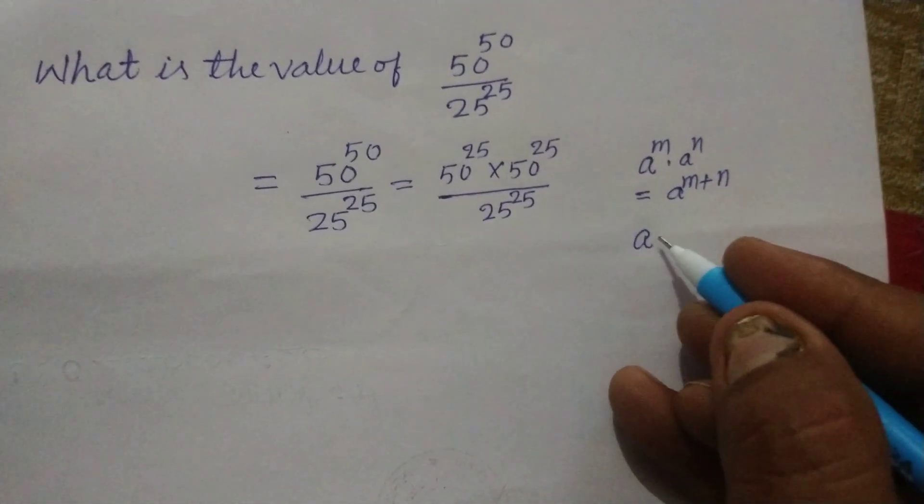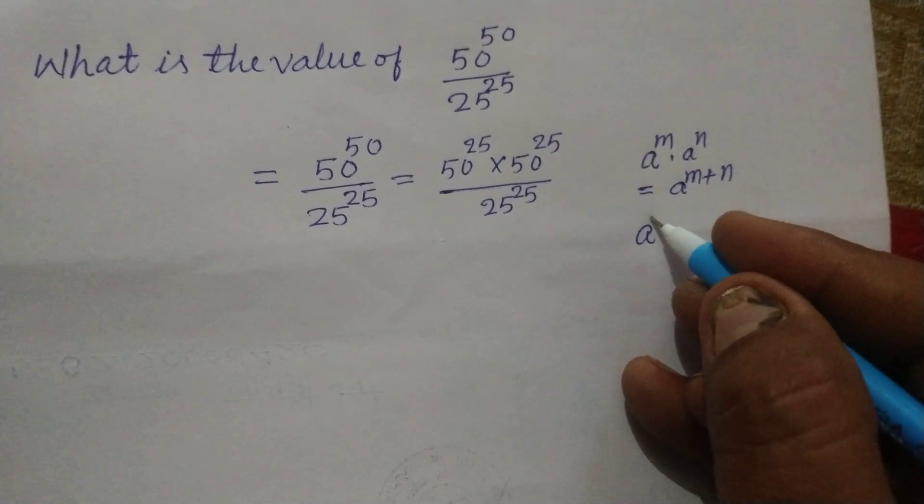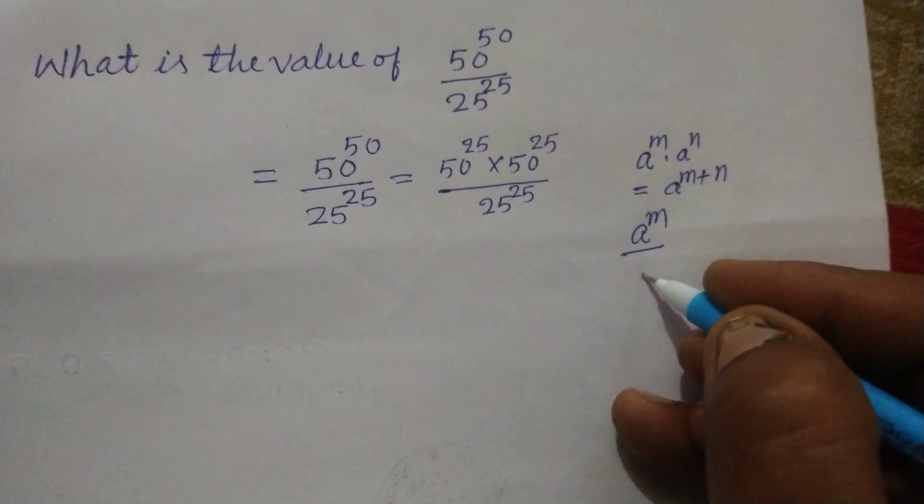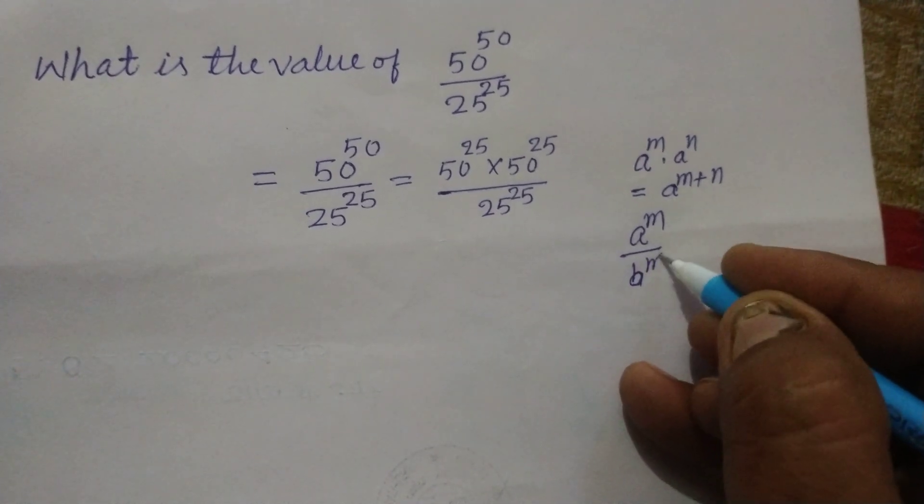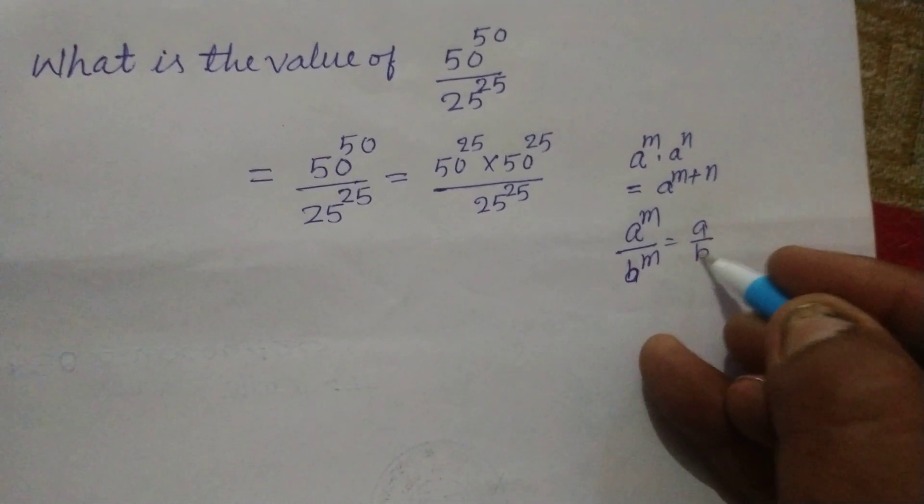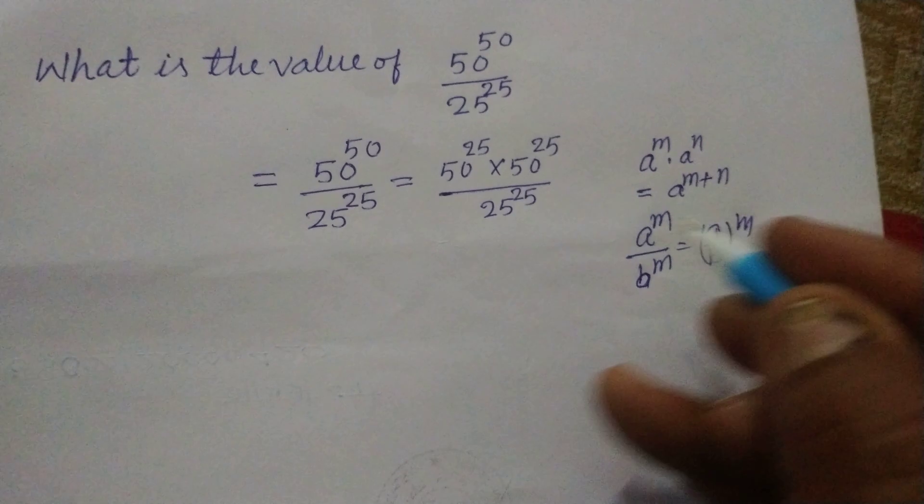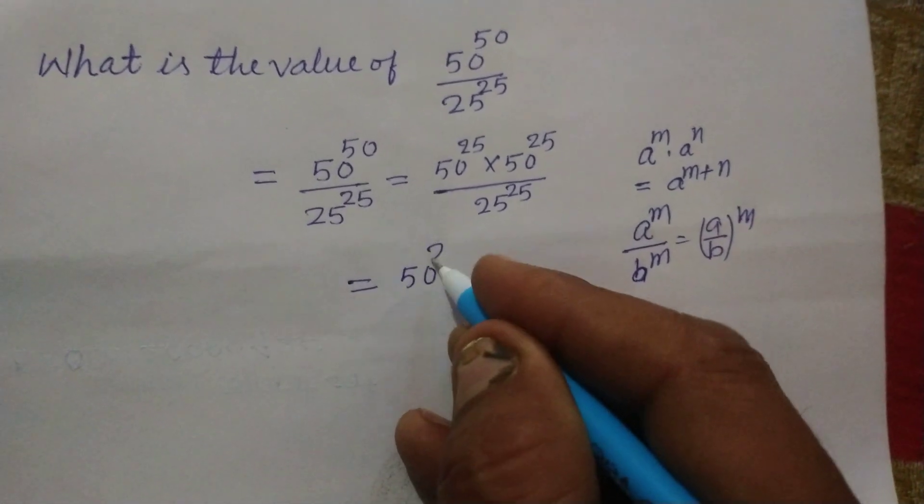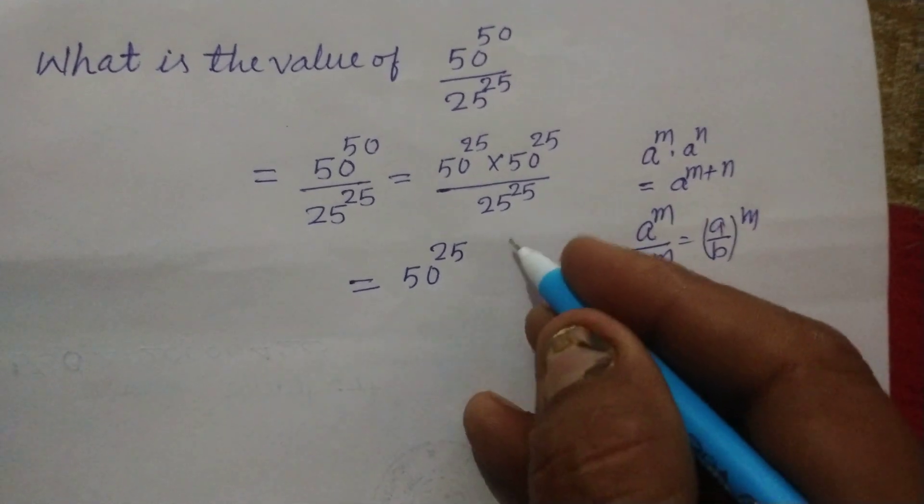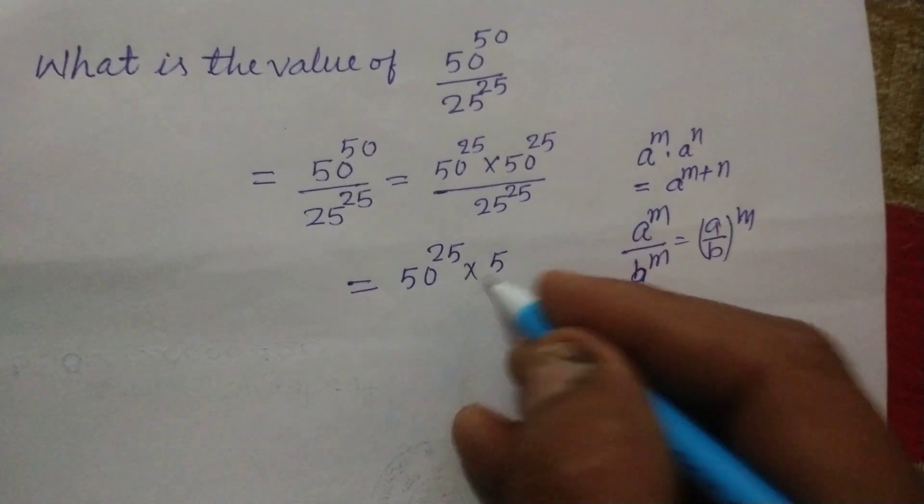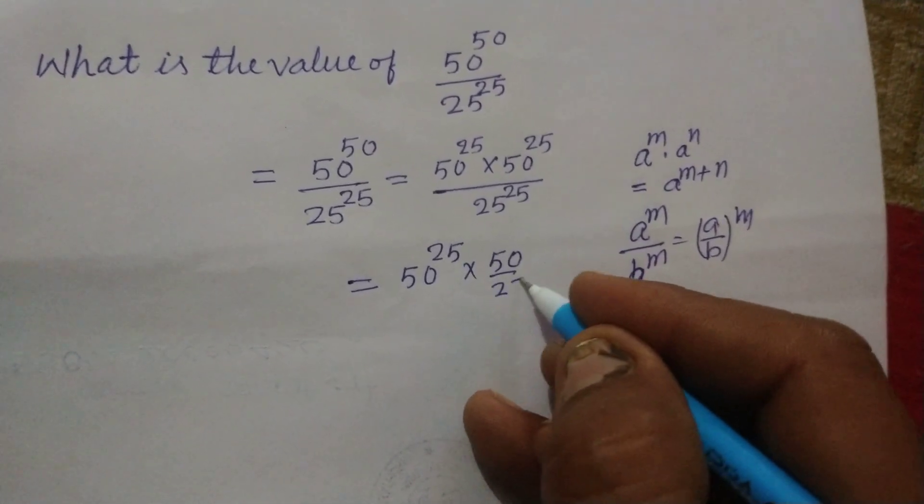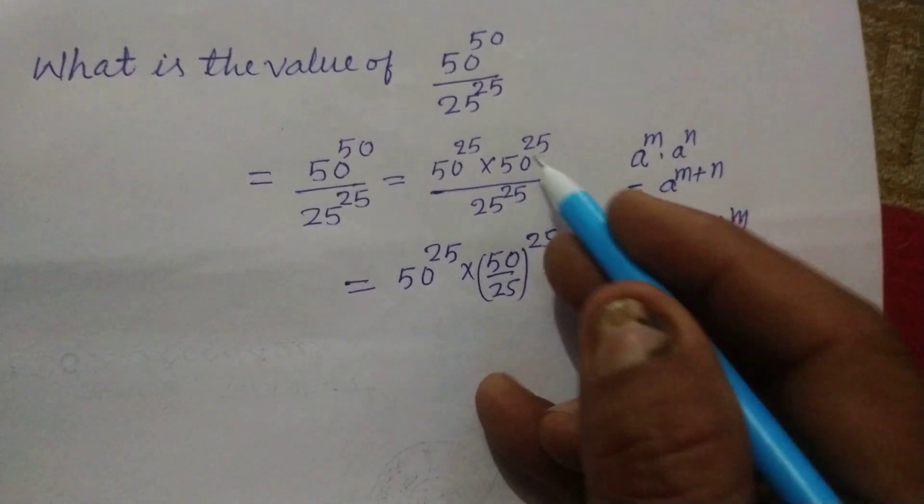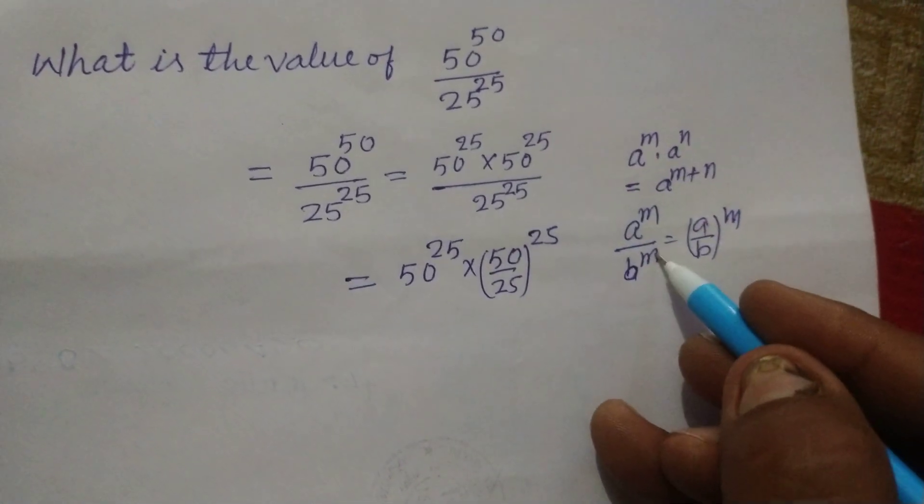Now you also know the law of exponent that a to the power m upon b to the power m equal to a upon b to the power m. So using this, we write 50 to the power 25 into 50 upon 25 to the power 25. We take this by using this law.